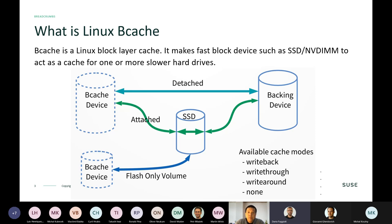When we use Bcache, a virtual device is created, and the I/O on this virtual device will go either into the cache device (SSD) or the back-end device (hard drive or distributed storage cluster), depending on the cache mode.